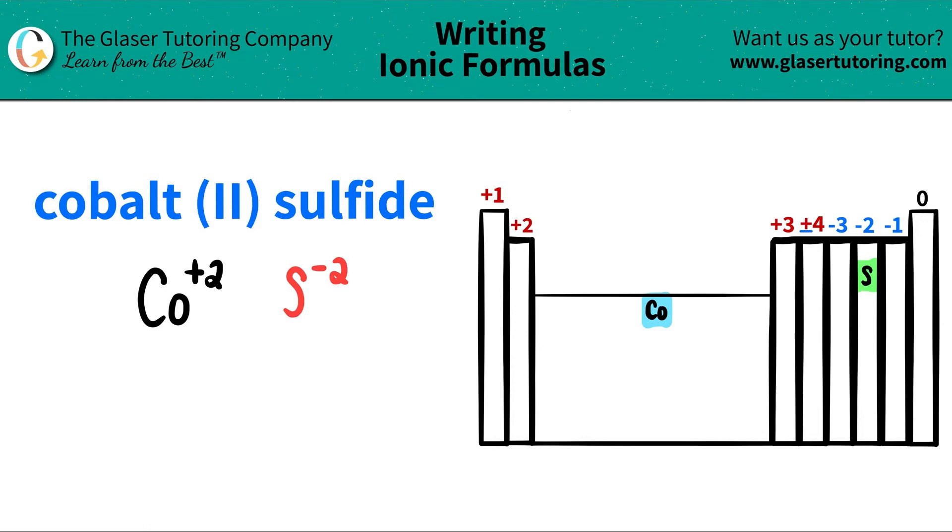Now we have the charges. All we have to do is just crisscross them and that will tell us how many of each element I have. So this +2 crisscrosses down telling me that I have two sulfurs and this -2 crisscrosses down telling me that I should have two cobalts.